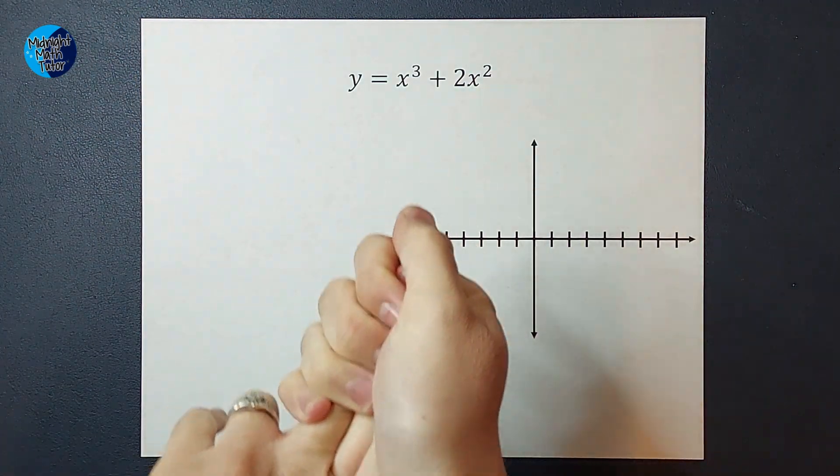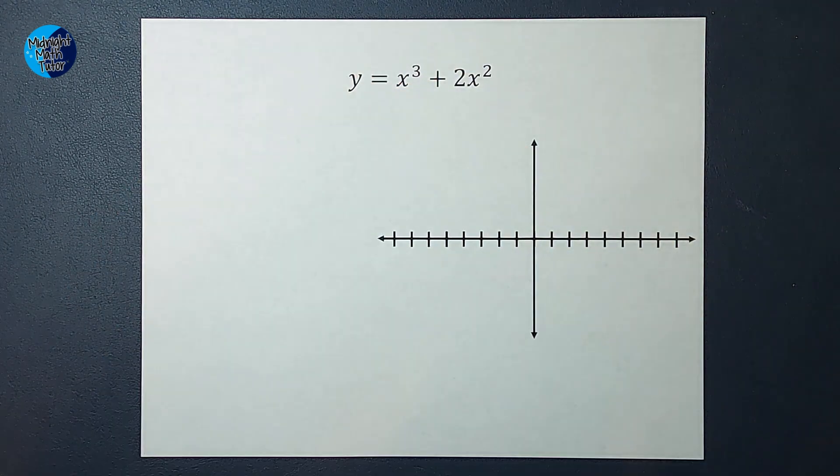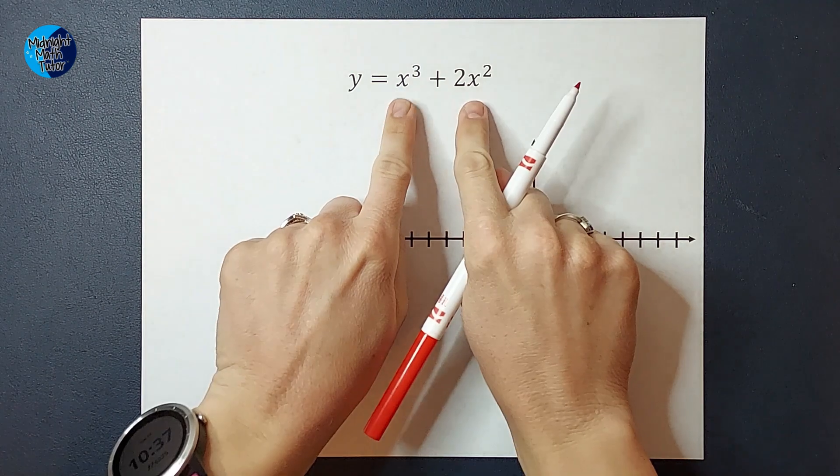Second, we're going to look at end behavior. Third, we're going to look at multiplicities, and then we'll talk about our fourth optional step once we get there. So first of all, I'm going to factor this.